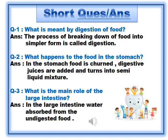Question number 3: What is the main role of the large intestine? Answer: In the large intestine, water is absorbed from the undigested food.